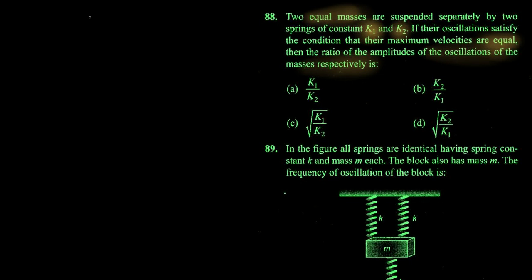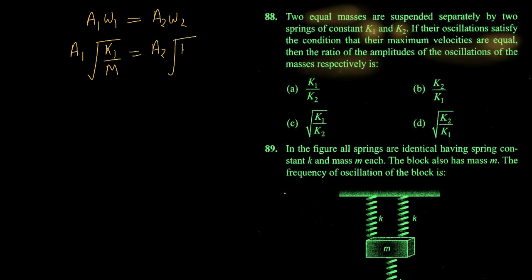Maximum velocity is A times omega. For the first mass, amplitude is a1 and angular frequency is omega1; for the second, a2 and omega2. Omega equals under root k by m, so omega1 = √(k1/m) and omega2 = √(k2/m). Setting max velocities equal: a1·√(k1/m) = a2·√(k2/m). We need the amplitude ratio a1/a2.